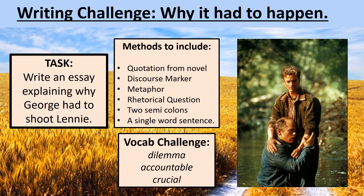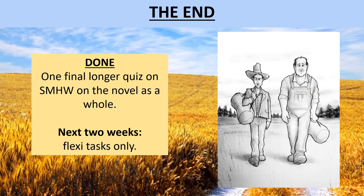So that is your task: write an essay explaining why George had to shoot Lenny. I haven't given you a structure, but aim for three to four paragraphs. Show your teacher your knowledge of the novel as a whole and the ideas we've discussed over the last 11 or 12 weeks. That should take between 30 and 40 minutes. And that's it — we have finished our unit on Of Mice and Men. You've got one final, slightly longer quiz on Show My Homework on the novel as a whole. The next two weeks on Show My Homework will be flexi tasks — you don't need to hand those in. Well done for getting to the end of the course, and I hope you enjoy your summer. Hopefully I'll see you soon in school.